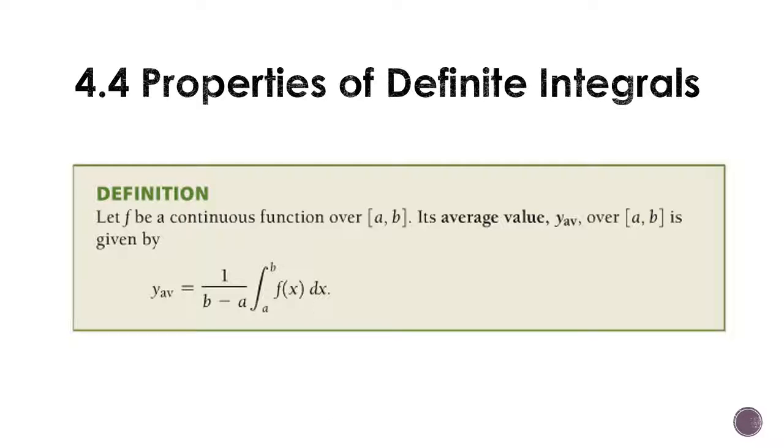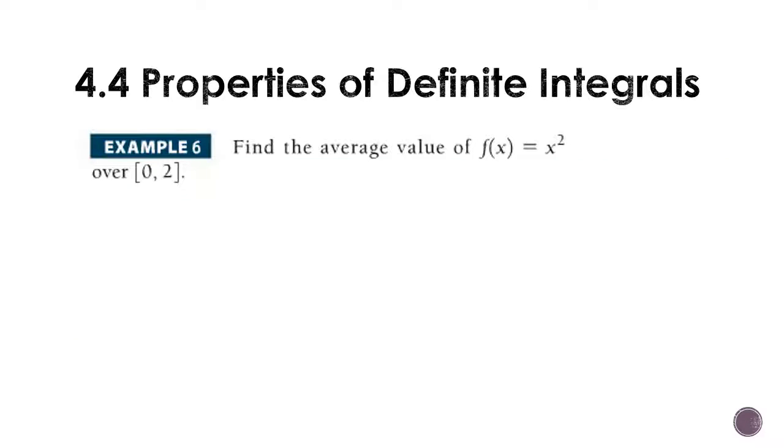Okay, we also have what's called the average value of a function. It says, let F be a continuous function over AB. Its average value, which is symbolized by Y with a little sub AV for average, over AB is given by one over B minus A times the integral from A to B of F of X. So, in other words, you're going to take the integral from A to B, and you're going to multiply it by one minus B over A. So, let's see how it works. Find the average value of X squared over zero to two. Pause the recording, see if you can follow the definition we just had, and resume to check your answer.